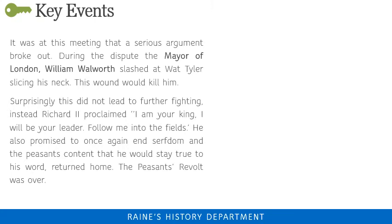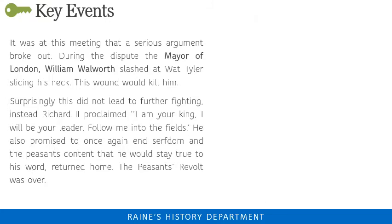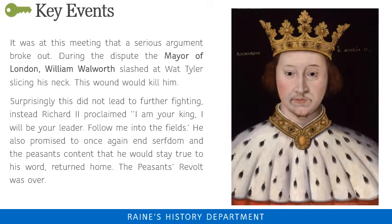It was at this meeting that a serious argument broke out. During the dispute, the Mayor of London, William Walworth, slashed at Wat Tyler, slicing his neck — a wound that would eventually kill him. Surprisingly, this did not lead to further fighting. Instead, Richard II proclaimed, 'I am your king, I will be your leader, follow me into the fields.' He also promised to once again end serfdom, and the peasants, content that he would stay true to his word, returned home. The Peasants' Revolt was over.